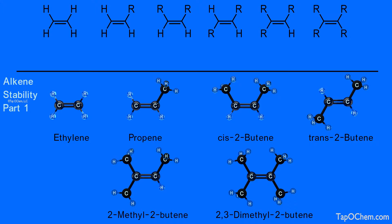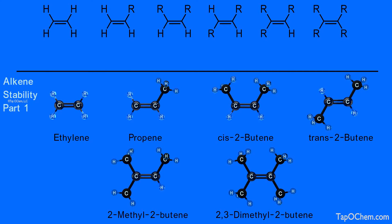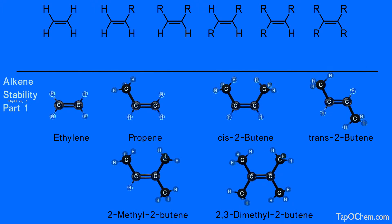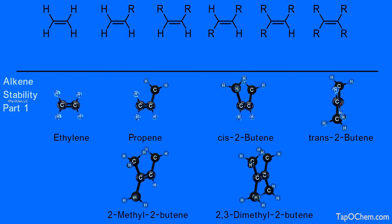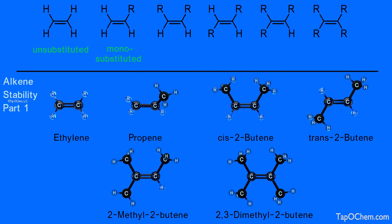We will first classify alkenes in terms of alkyl substitution. On the screen, we have line drawings from the top with R groups, and in the bottom section, ball-and-stick models where alkenes are substituted with methyl groups that correspond to the R groups. Ethylene is an unsubstituted alkene — only hydrogen atoms are bonded to the carbon-carbon double bond. A monosubstituted alkene is one where one alkyl group is bonded to the carbon-carbon double bond.